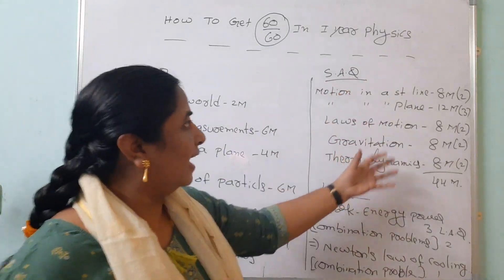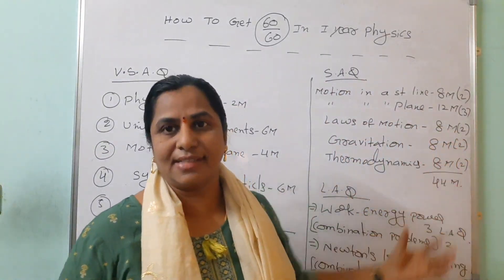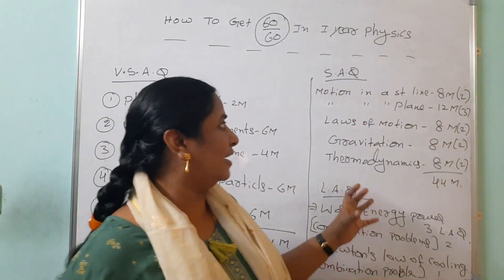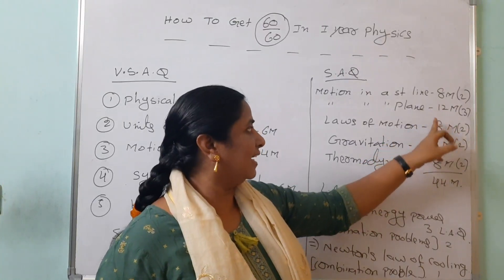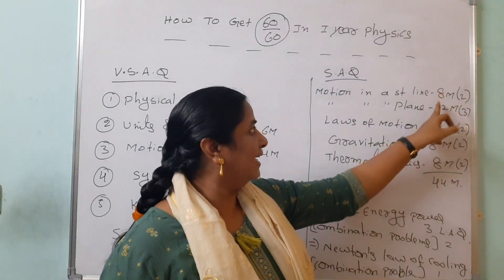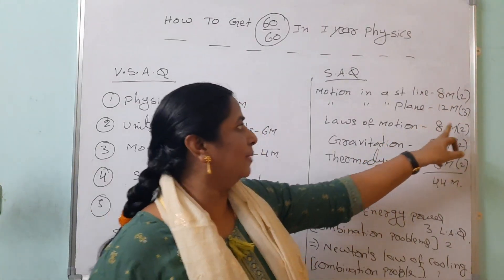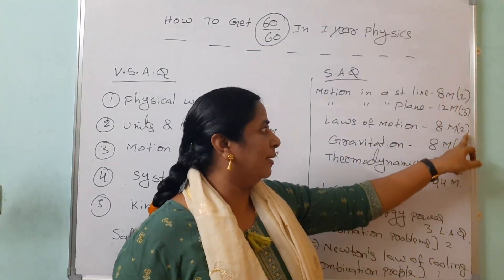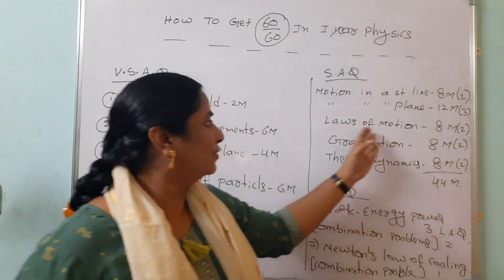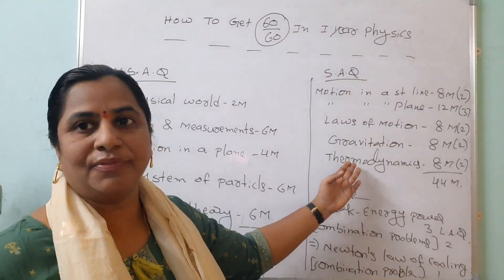So if you are reading, actually you should give from this section 6 for 24 marks - 6 answers you should give. First one, second one, third one - if you are reading these three chapters also you can able to write 3 plus 2, 5, 5 plus 2, 7. Safe side, you should read these two chapters also for 60 by 60 marks.